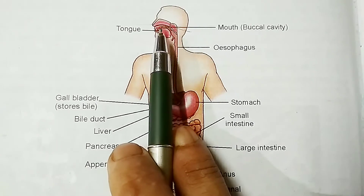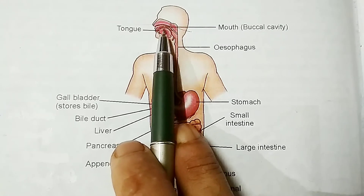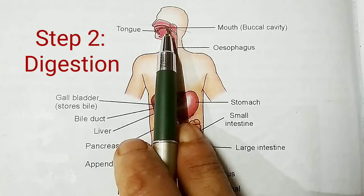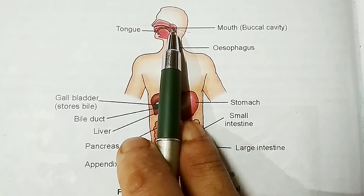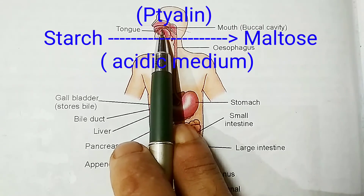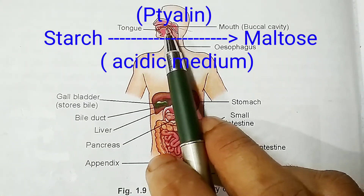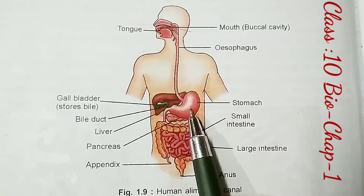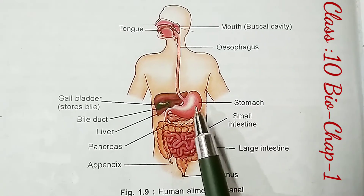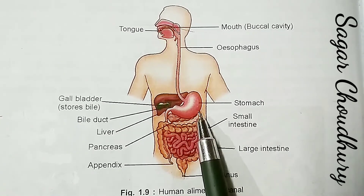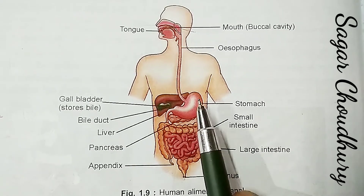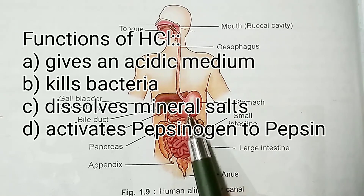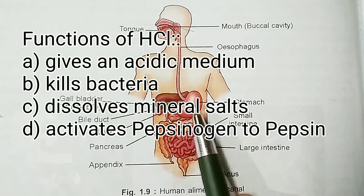In the mouth, the teeth chew and masticate food into smaller pieces — this is mechanical digestion. Three pairs of salivary glands pour saliva into the mouth cavity. Salivary amylase, or ptyalin, breaks starch and complex carbohydrates into maltose. From the mouth, food passes to the esophagus where no digestion takes place, then to the stomach where food is received, stored, and mixed with gastric juices. The gastric wall secretes gastric juice containing gastric enzymes and hydrochloric acid. The hydrochloric acid gives an acidic medium required for the activity of gastric enzymes, as most enzymes function only in an acidic medium.